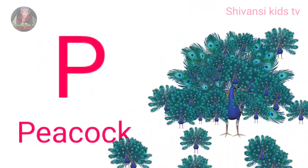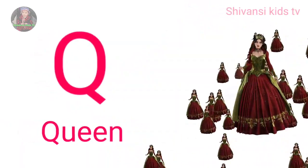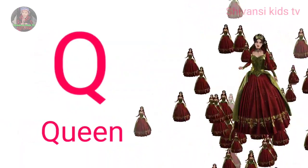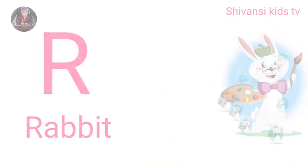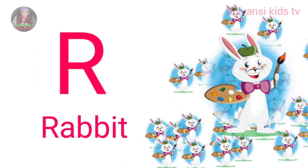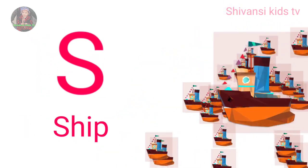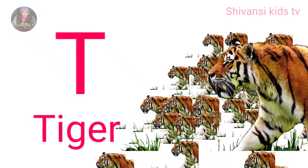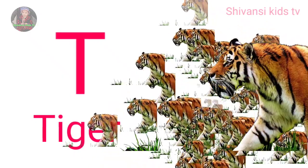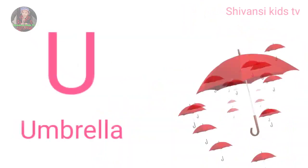O for orange, P for peacock, Q for queen, R for rabbit, S for sheep, T for tiger, U for umbrella.